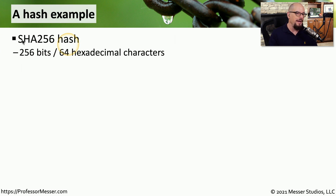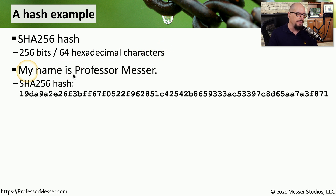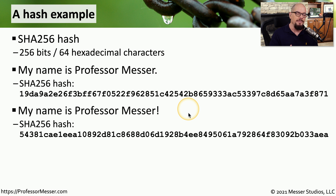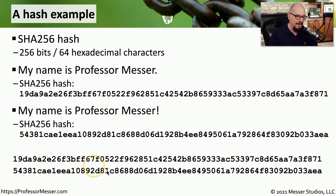Let's have a look at some hashes. We'll perform a SHA-256 hash, which is a 256-bit hashing algorithm that outputs the equivalent of 64 hexadecimal characters. We'll take the sentence 'My name is Professor Messer.' with a period at the end. If we hash that single sentence, we get this entire value as the SHA-256 hash. Now let's create a hash of a similar input: 'My name is Professor Messer!' with an exclamation mark. You'll notice the hashing value of the second input is very different — in fact, almost every single character of that hash is a different value, even though the input only changed by one single character.